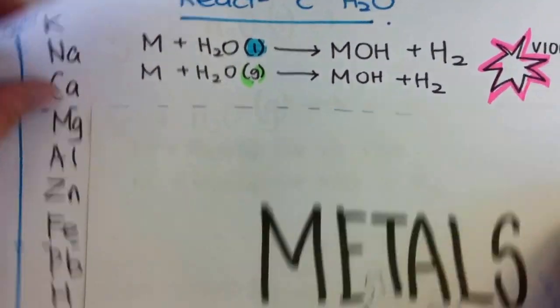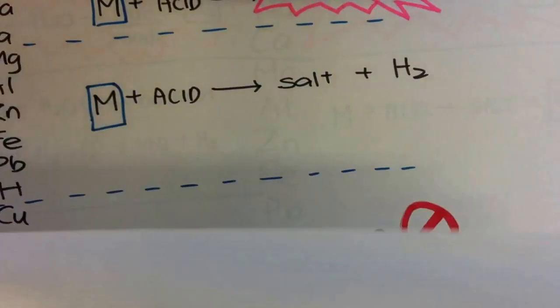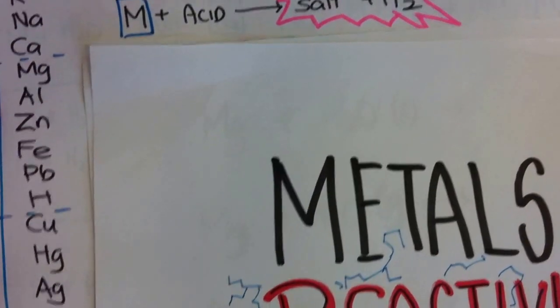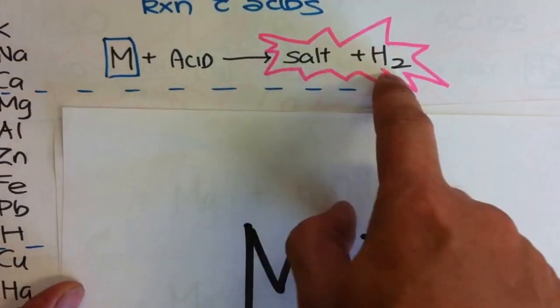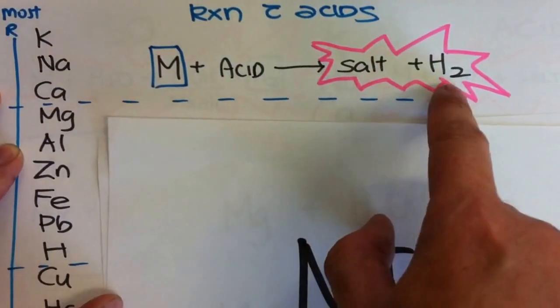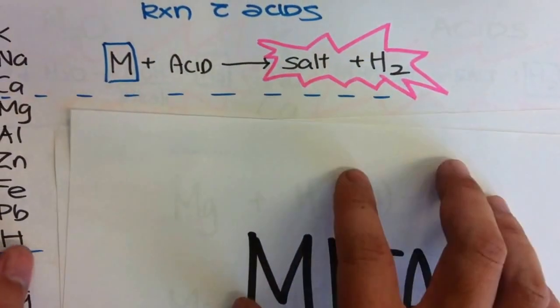Let's look at their reaction with acid. In the case of acid, same thing. Metal plus acid, you will get a salt plus hydrogen. However, this reaction is so violent, not a good way. You should not put this metal with acid or water.